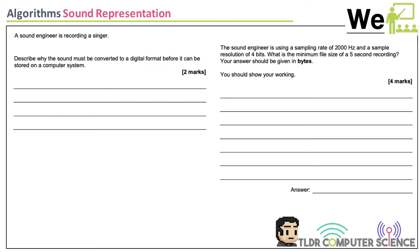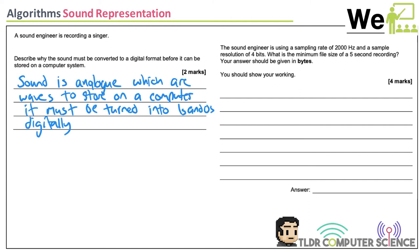Describe why sound must be converted to a digital format before it can be stored on a computer system. Sound is analog — it consists of waves. To store it on a computer, we need to turn it into digital ones and zeros.